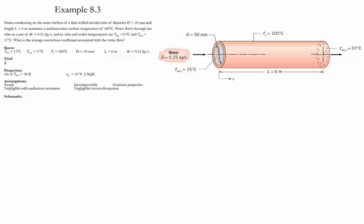The steam maintains the outer surface temperature uniformly at 100°C. The water inlet temperature is 15°C and the outlet is 57°C. Water flows through the tube at a rate of 0.25 kg/s. The goal is to determine the average convection coefficient associated with the water flow.